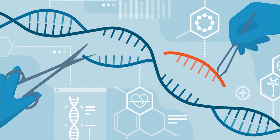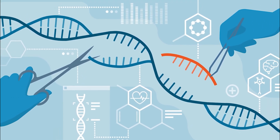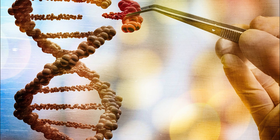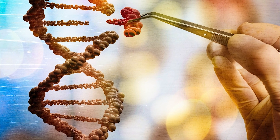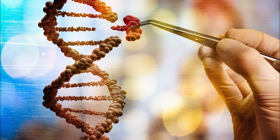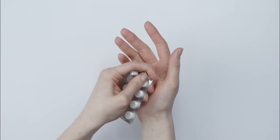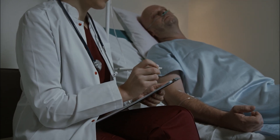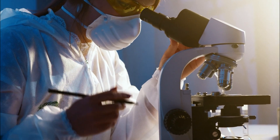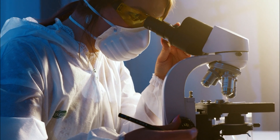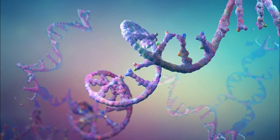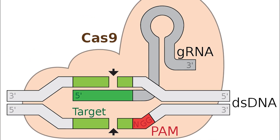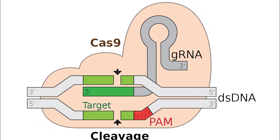Gene editing and CRISPR. Gene editing is a revolutionary technology that allows scientists to make precise changes to the DNA sequence. One of the most popular gene editing tools is CRISPR, which stands for Clustered Regularly Interspaced Short Palindromic Repeats. CRISPR has the potential to revolutionize the field of medicine, as it may allow for the correction of genetic mutations and the treatment of genetic disorders. It works by using RNA, complementary to a specific target DNA sequence, to guide an enzyme called Cas9 to the desired location on the DNA molecule.